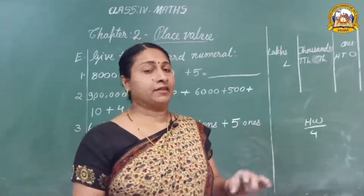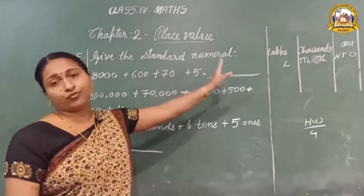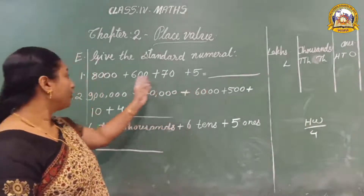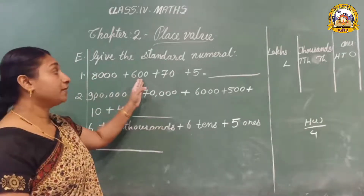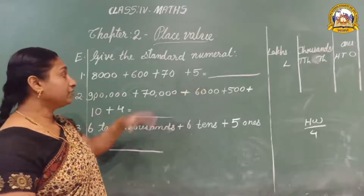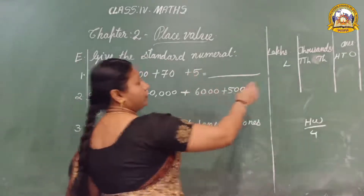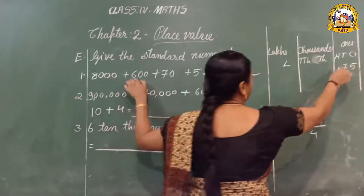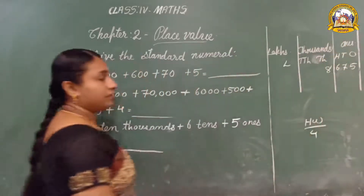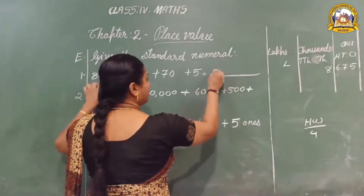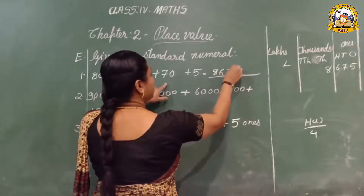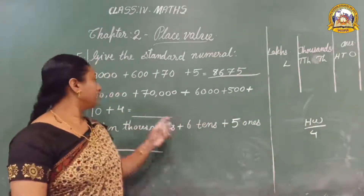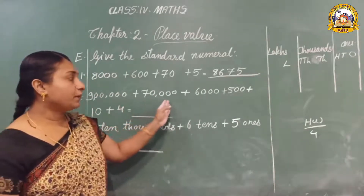Now let us do the next exercise — it is to give the standard numeral, meaning we have to write the short form. Eight thousand plus six hundred plus seventy plus five. Start from the right: five ones, then seven tens, then six hundreds, then eight thousands. Write the number: 8,675.